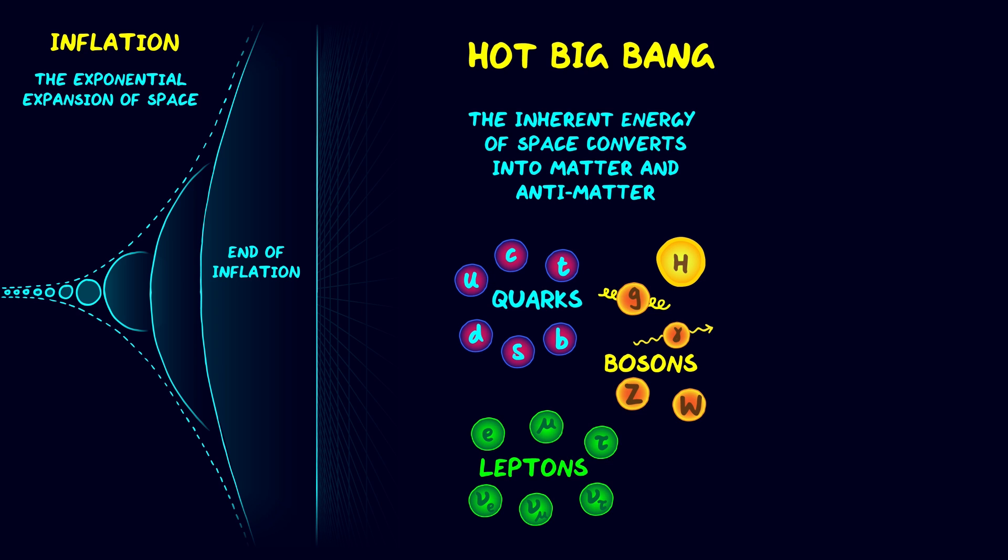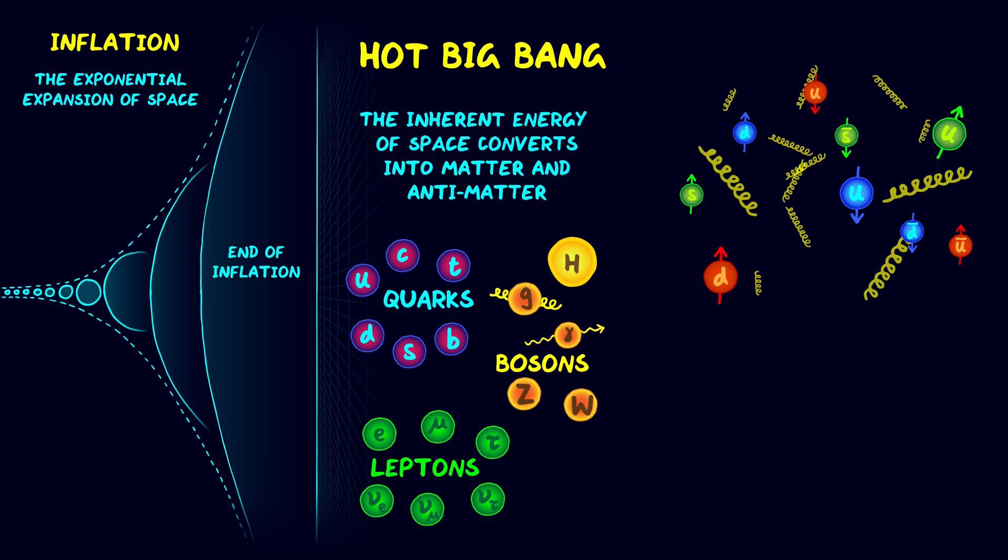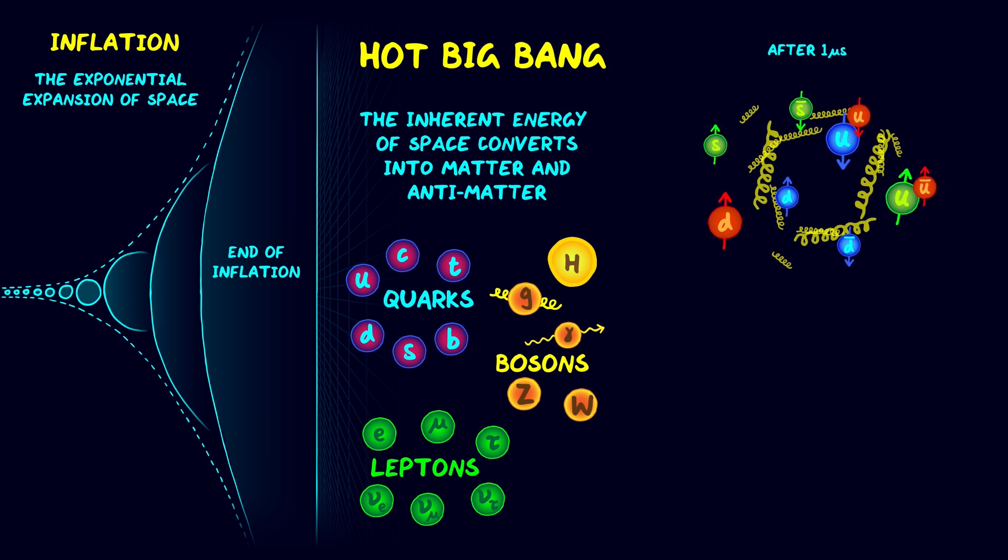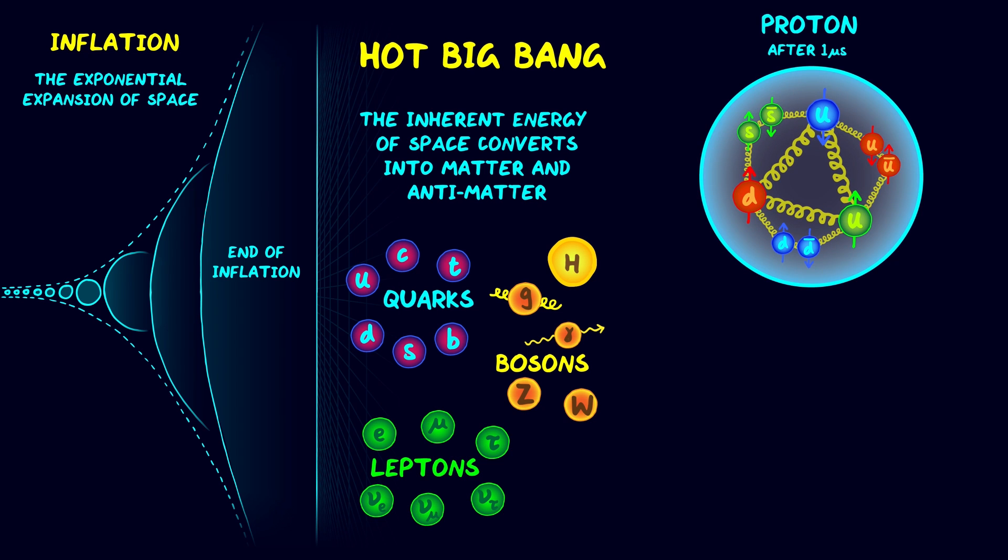Even though inflation stopped, space was still expanding, so over time this matter became less dense and less hot. First, there were just fundamental particles. Then after a microsecond, the quarks condensed, creating protons and neutrons. Then a second later, neutrinos stopped interacting strongly with the other particles and flew free.